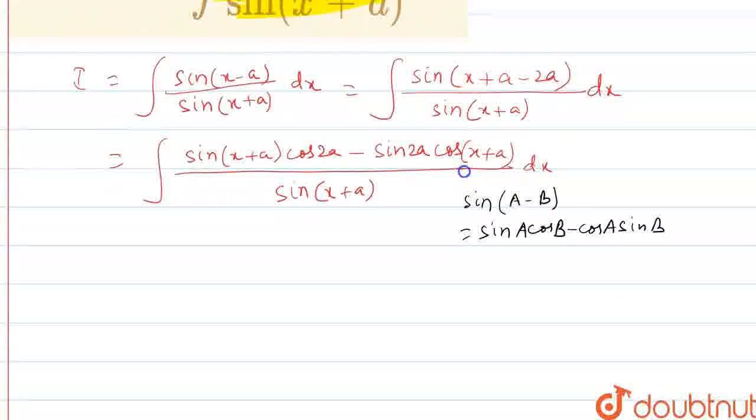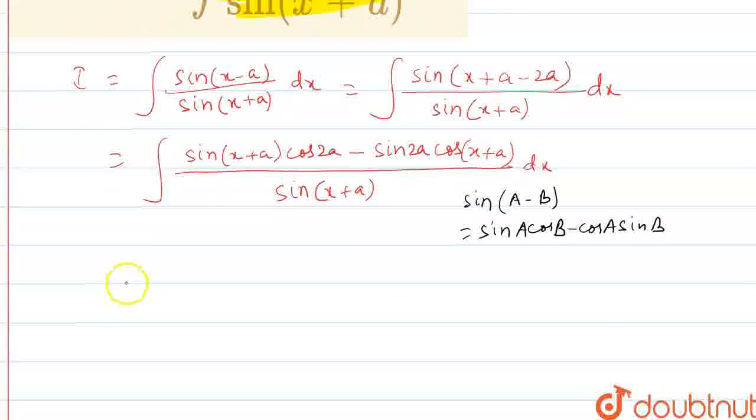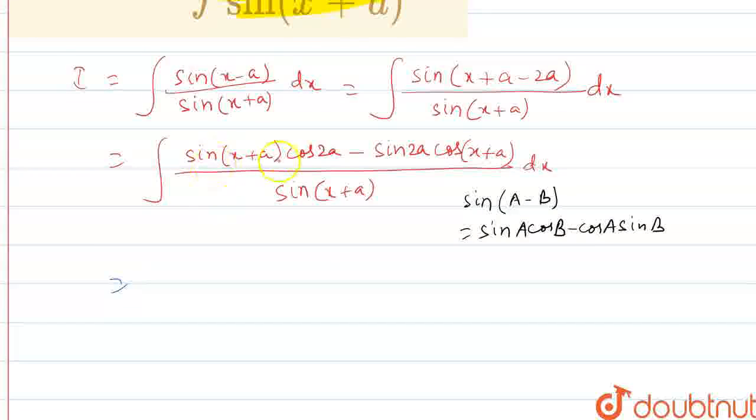Now, this integral can be split into two parts. First of all sin(x + a) divided by sin(x + a) becomes 1, cos(2a) taken as constant outside, minus sin(2a) is a constant taken outside and cot(x + a) dx.